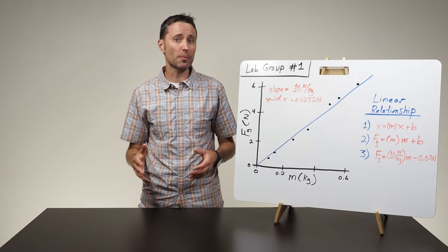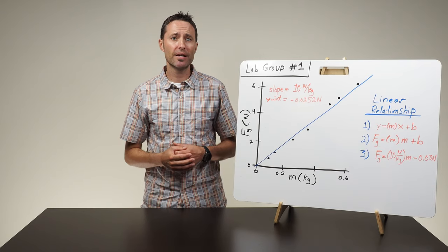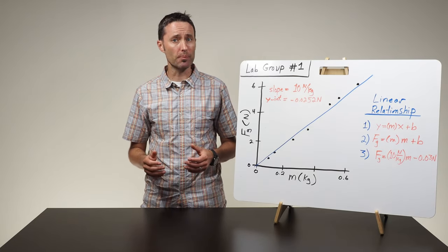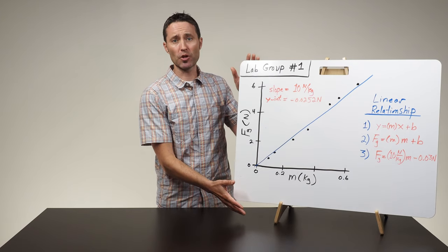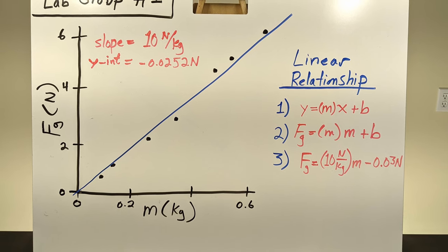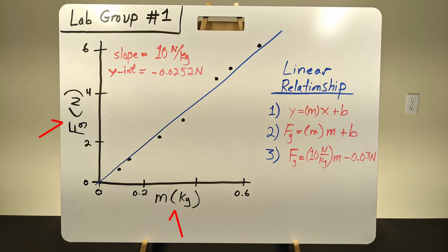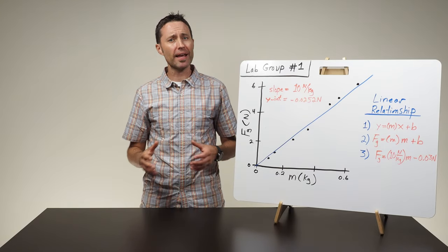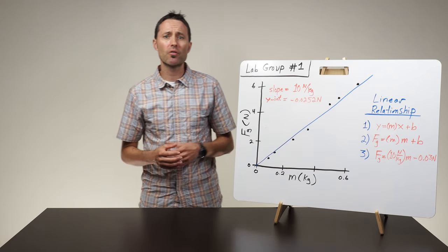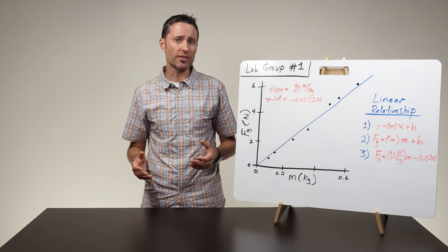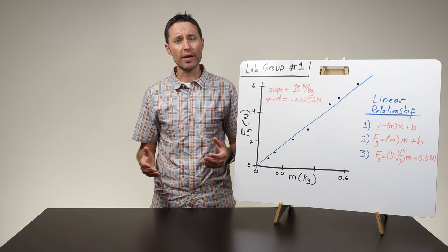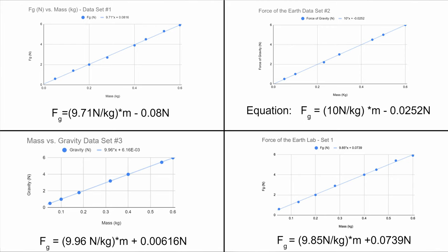Facilitate a whole class conversation about the relationship between the force of gravity on an object and its mass. Have each lab group record their graph and resulting equation on a large whiteboard. The whiteboard should include a graph of the collected data and the algebraic equation showing the relationship between the force of gravity on an object and its mass. Students should label each axis and include the value and units of measure for both the slope and y-intercept. Have the class circle up so that everyone can clearly see the graphs and equations on each whiteboard, then ask students to compare them and identify any similarities or differences.